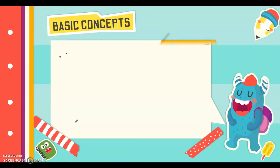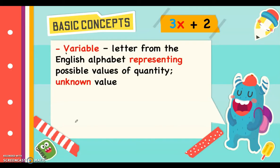An example of an algebraic expression is 3x plus 2. Let us define the basic concepts, starting with variable. A variable is any letter from the English alphabet representing possible values of a quantity or any unknown value. In algebra, letters are often used to represent numbers. So in 3x plus 2, this x represents the unknown value — it is not the multiplication symbol anymore.